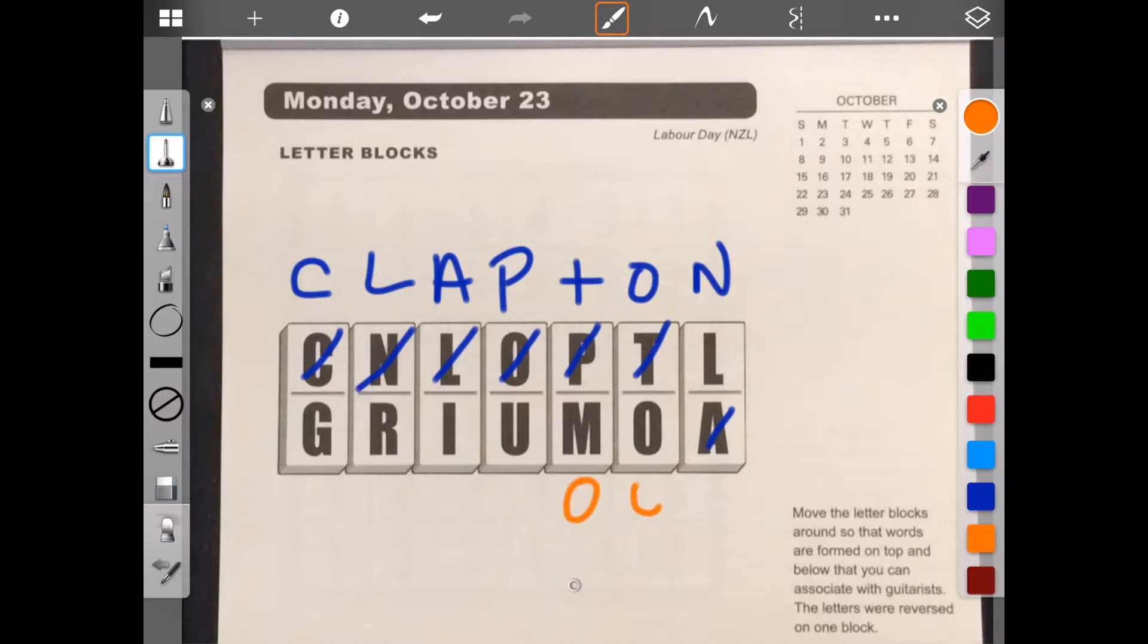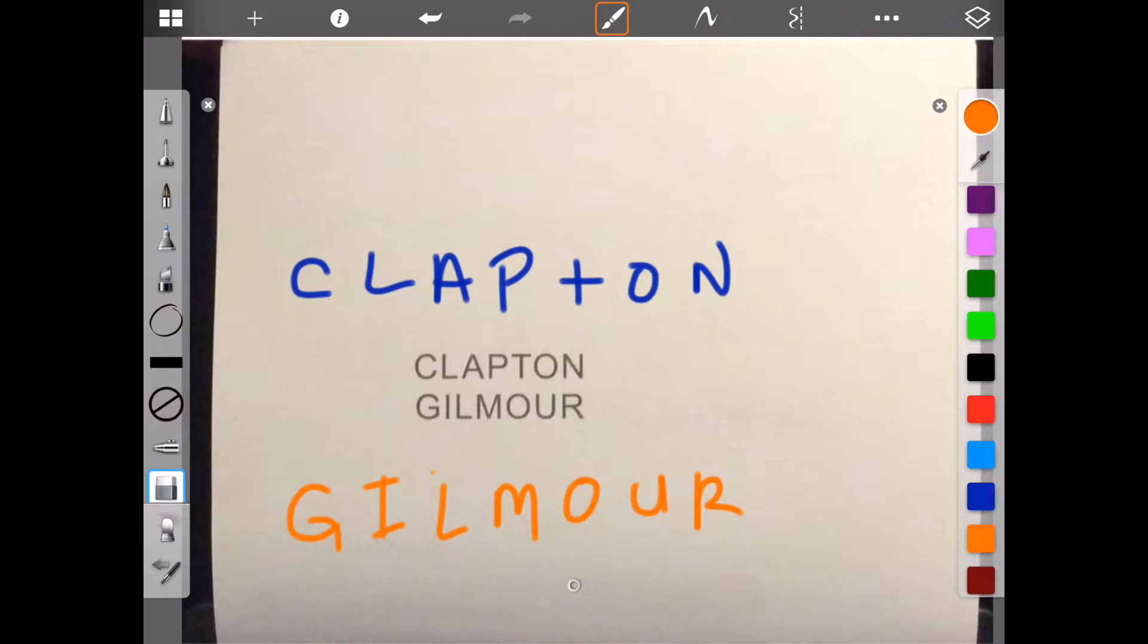That leaves me one vowel. G doesn't fit there. So let's try it here. I think that's used up all the letters. I have no idea, but I'm going to go with this. Let me erase this in the center so we can see the answer. Oh, I actually have no idea who Gilmore is, but I got it. I'm hoping that's Eric Clapton that they're talking about. Excellent. See you next time.